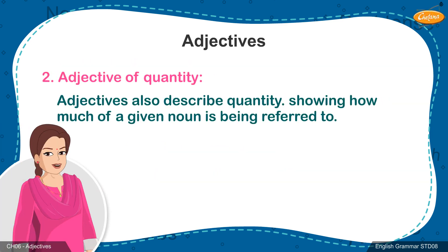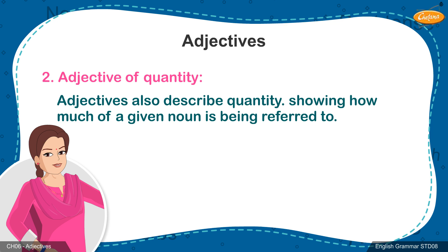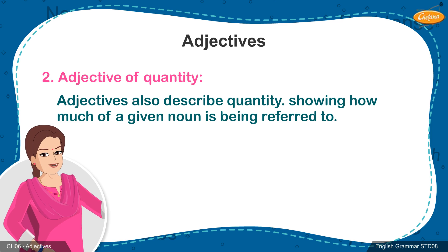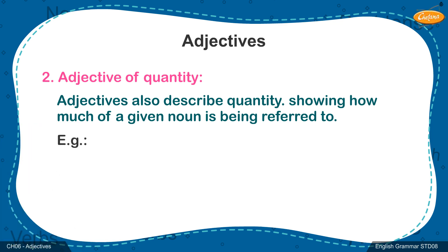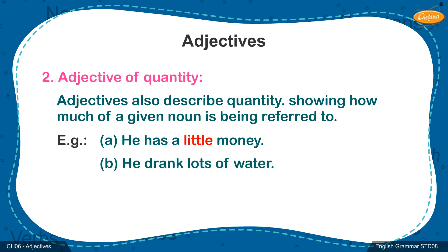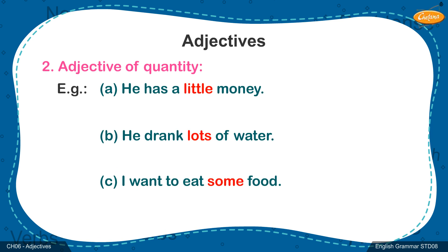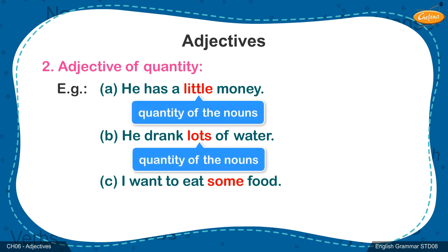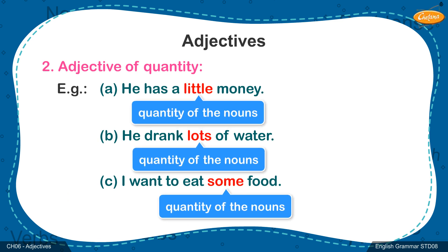Another common use of adjectives is to describe quantity. These adjectives show how much of a given noun is being referred to. Some examples are: the words little, lots, and some tell us the quantity of the nouns — money, water, and food respectively.